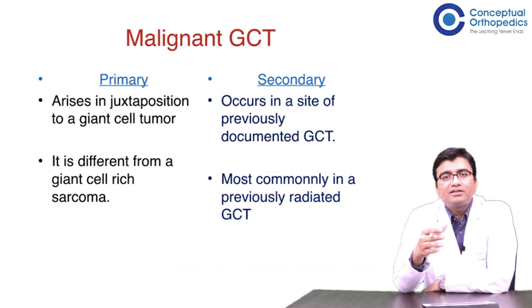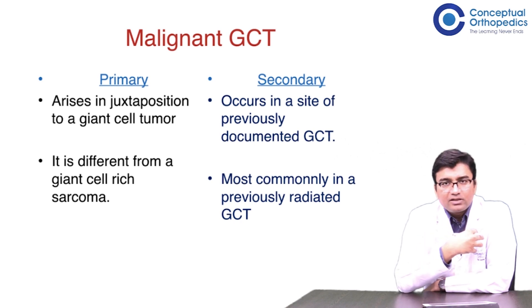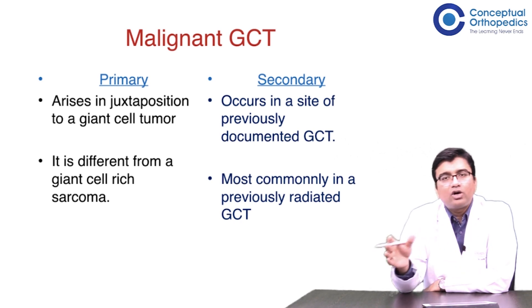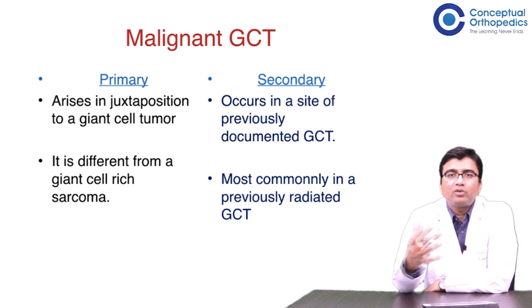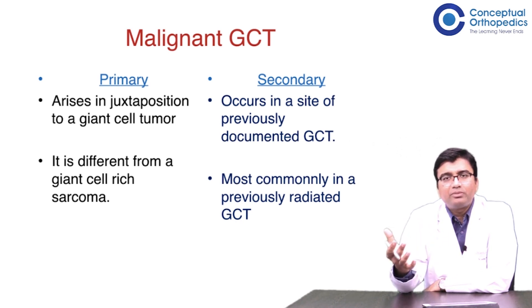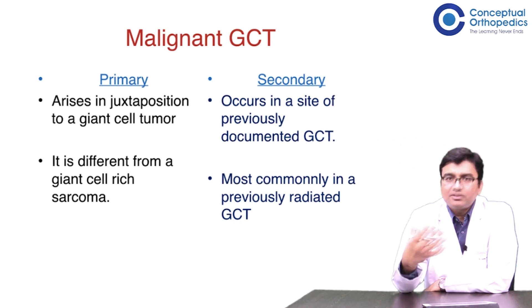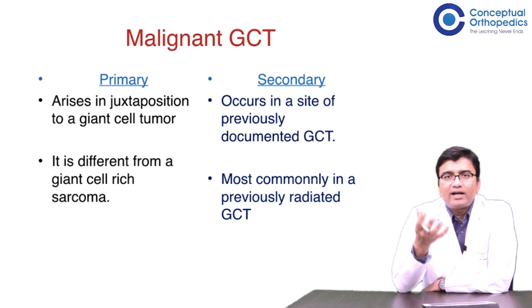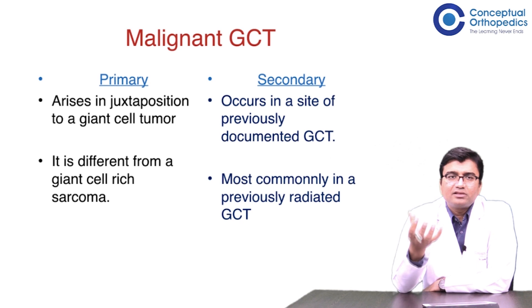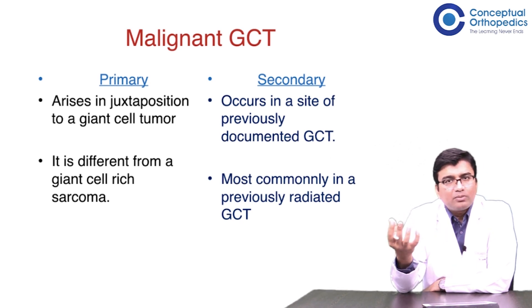When it is a GCT with no sarcomatous component but with a lung nodule, it is treated like a routine GCT. For the lung nodules, you assess whether they are resectable or non-resectable. Depending on the symptomatology, you may add denosumab, which helps contain the lesions, prevent their growth, and even shrink them.